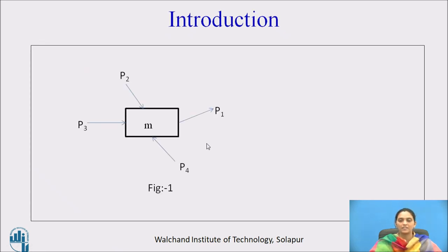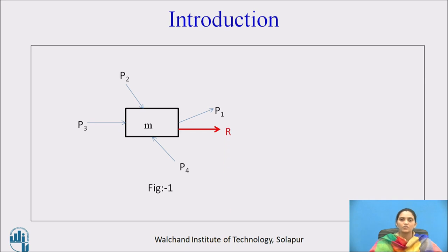We will see this diagrammatically. Let there be a body of mass M with several forces acting on it. The resultant of these forces, let it be R, is acting in the X direction. According to D'Alembert's principle, the inertia force induced in the body due to external forces is equal to the resultant force, acting in the opposite direction of that resultant force.